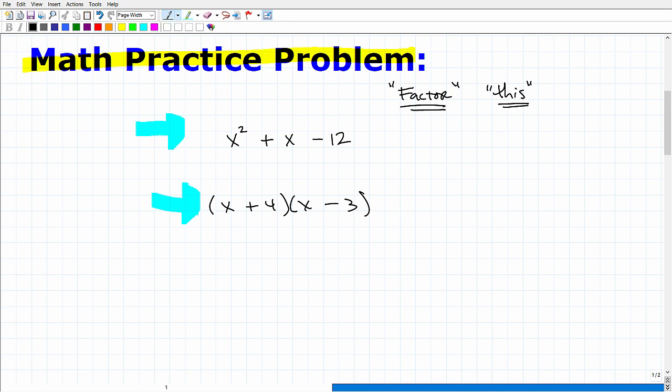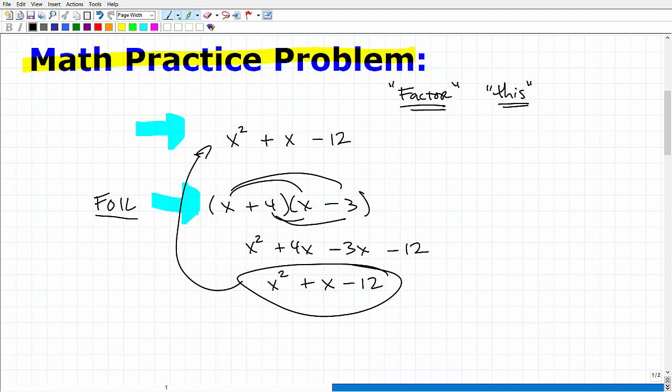So hopefully you tried it, but basically we can use the FOIL technique, F-O-I-L. This would be first, outer, inner, last. I don't want to go off on too many tangents here, but we need to be able to multiply first before we factor. This would be x squared, plus 4x, negative 3x, and negative 12. When I combine my like terms, I get back to this.